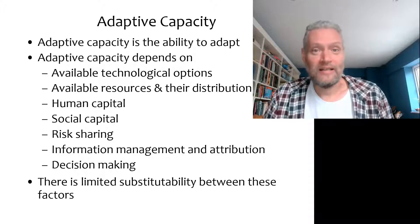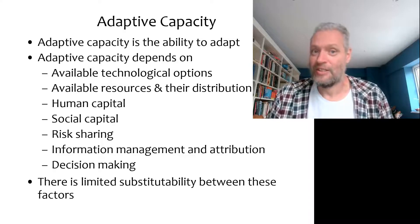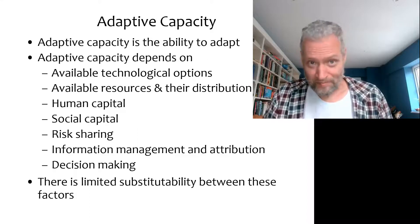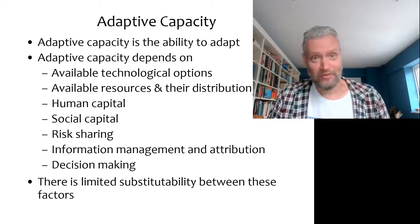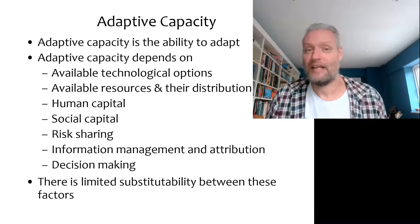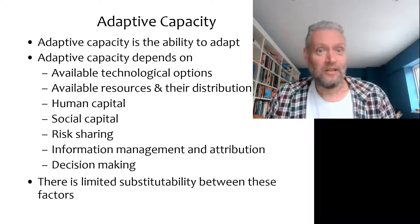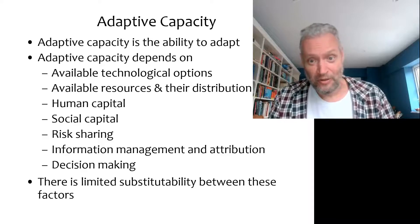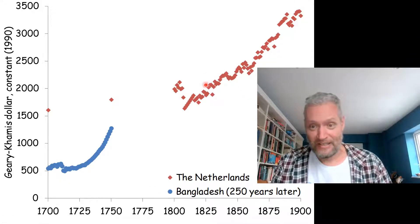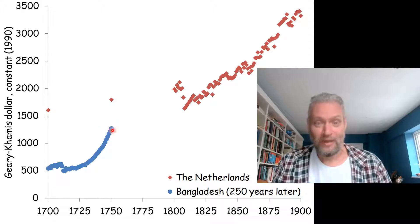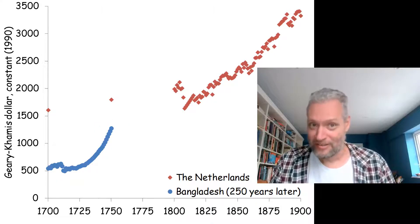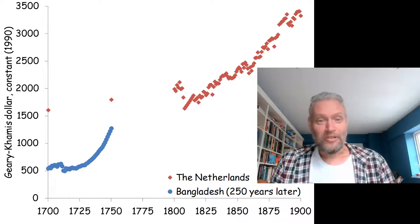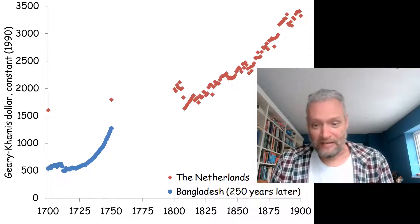Yet we think of Bangladesh as extremely vulnerable to sea level rise and climate change, and the Netherlands as not so vulnerable. The first thing you might think is that the Netherlands is much richer than Bangladesh. That's true now — but the Netherlands started its modern dike-building program in 1850. And if you compare the income of the Netherlands in 1850 to the income of Bangladesh in 2020, the gap is actually not that large. So economic resources probably cannot fully explain the difference.